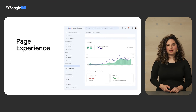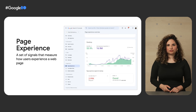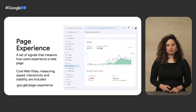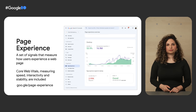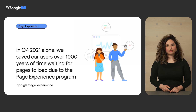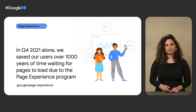All right, one last update. Last year, we mentioned the page experience ranking change. The update included combining a set of signals that measure how users experience a page — we call them Core Web Vitals, and they measure speed, interactivity, and stability. There are other talks this I/O that discuss Core Web Vitals in more detail, and we recommend checking them out. For the page experience update, we started off with mobile, and just recently, we rolled out the ranking change on desktop search as well. We've been following along how sites have improved with these metrics, and you can head to the page experience report on Search Console to better understand how your site is doing. We're excited to share that in Q4 2021 alone, we saved our users over 1,000 years of time waiting for pages to load due to the page experience program. That's an amazing result, and a reminder that the web is both extremely popular, and that there's still a lot to achieve in making it truly fantastic.